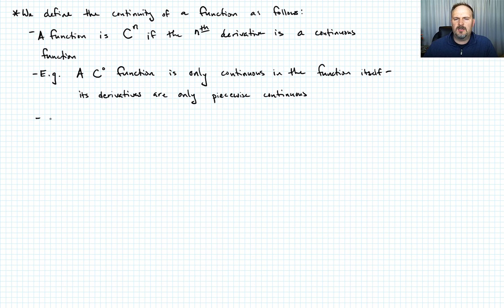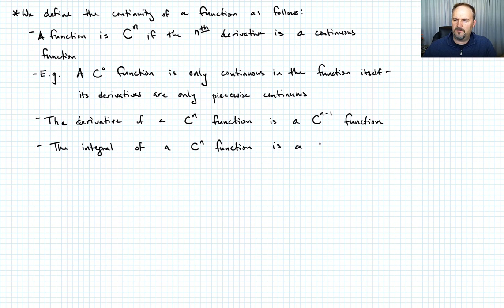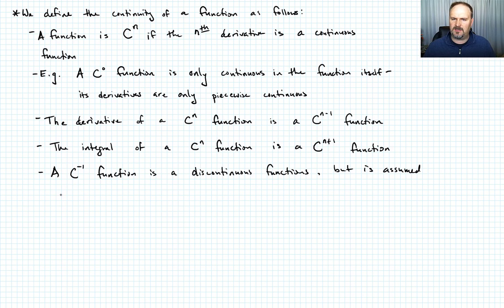The derivative of a C^n function is a C^(n-1) function, and the integral of a C^n function is a C^(n+1) function. We can sometimes say a C^(-1) function - that's a function that's not continuous but is still assumed to be differentiable between the points of discontinuity.